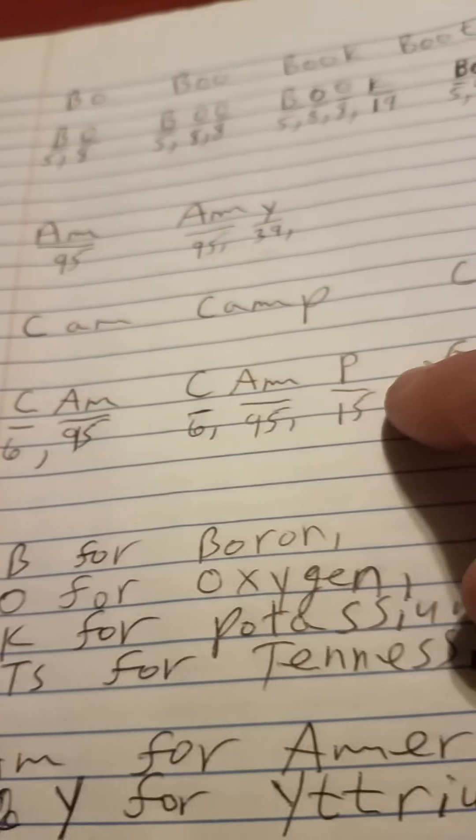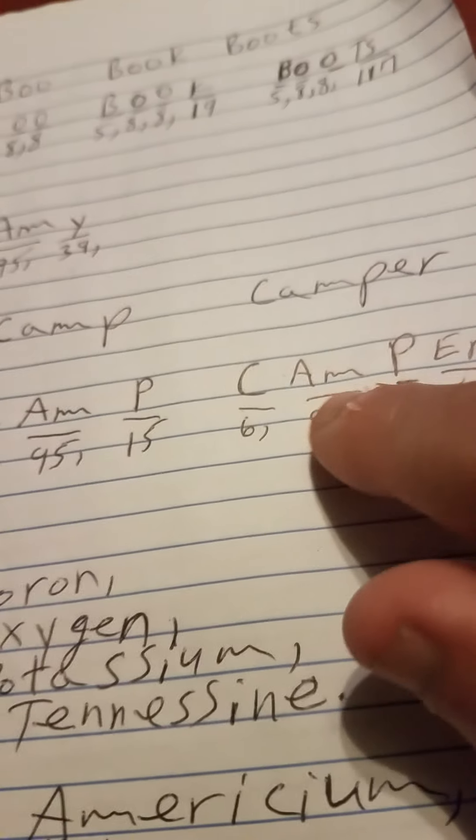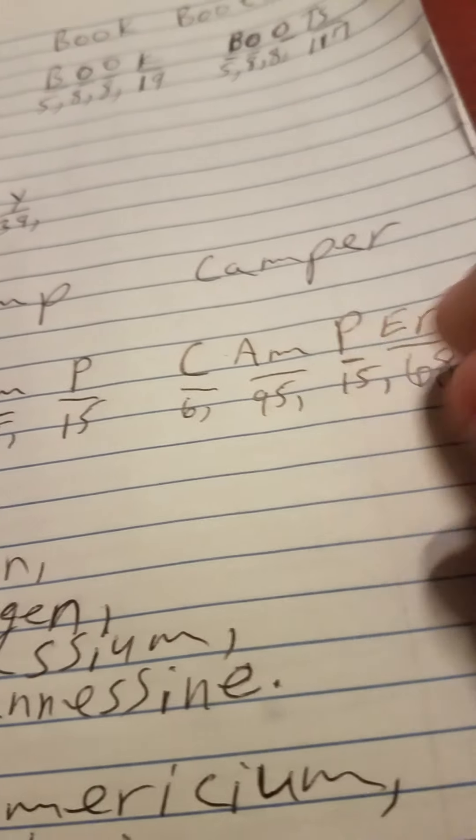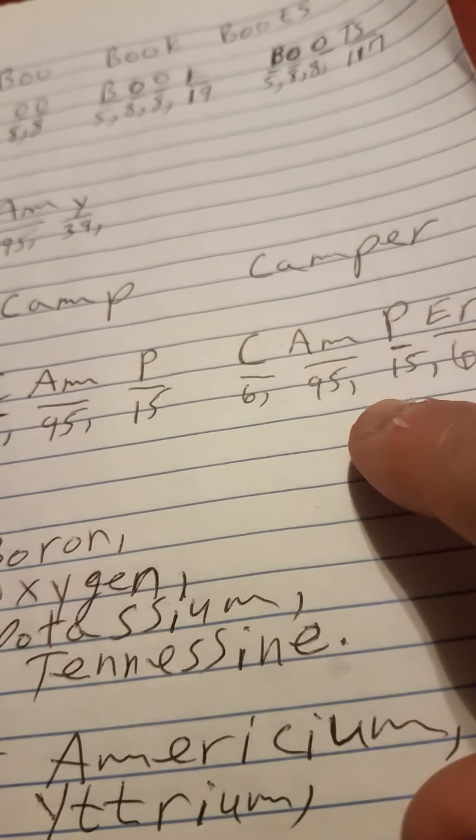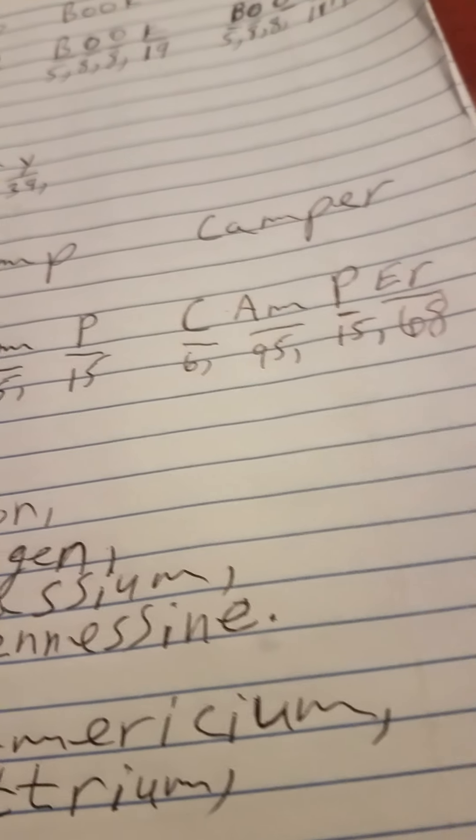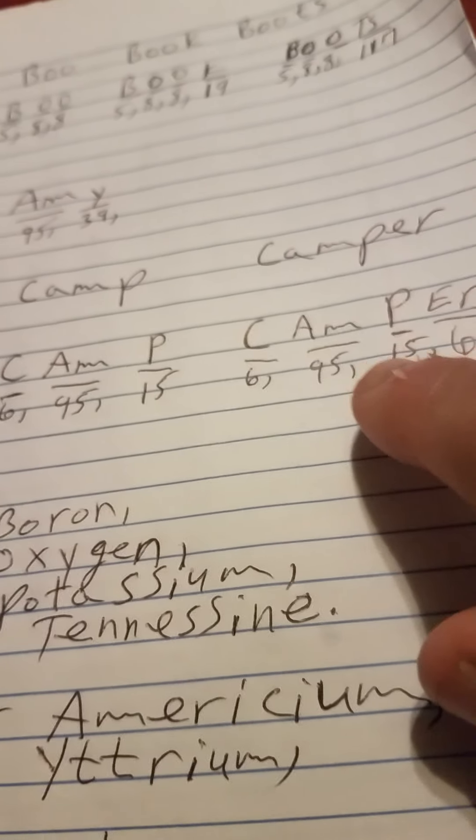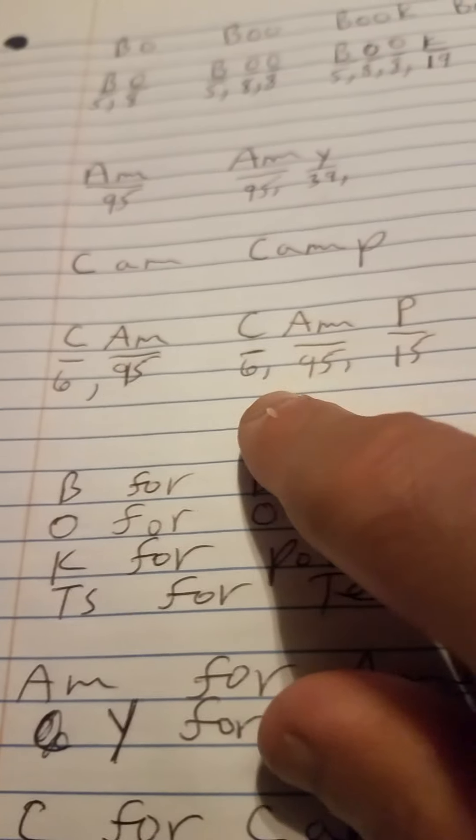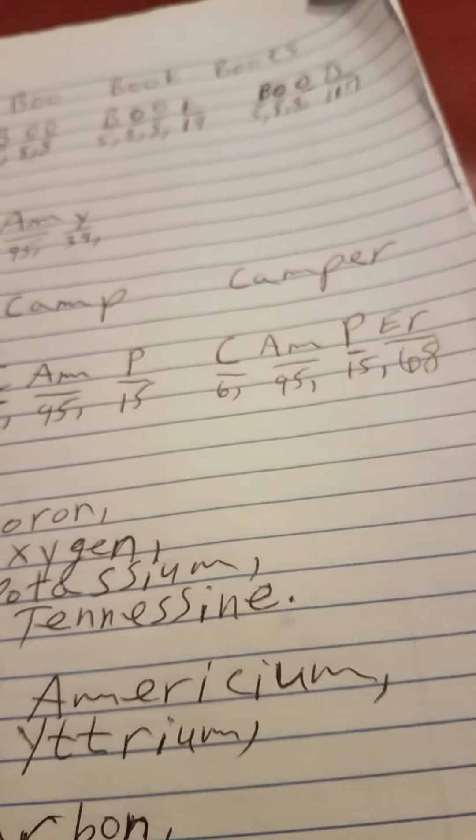Then I took the 6, 95, 15 or the C-A-M-P and I added ER to get camper. And you got 6, 95, 15, and I added 68 for Erbium, capital E and a small R. I went from C-A-M to C-A-M-P to C-A-M-P-E-R.